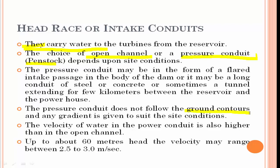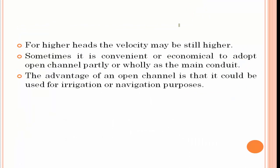The pressure conduits do not follow the ground contours, so we can have some deviation in the pipeline connection. The velocity of water in the pressure conduits is greater than in the open channel. Up to about 60 meters head of water, the velocity may be in the range of 2.5 to 3 meters per second. For higher heads, the velocity may be higher. Sometimes it is convenient or economical to use an open channel as the main conduit, and the advantage of an open channel is that it can also be used for irrigation or navigation purposes.